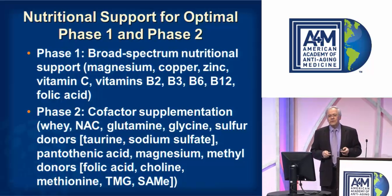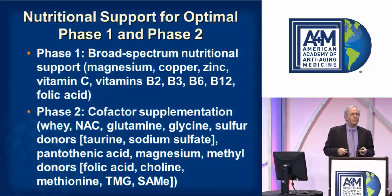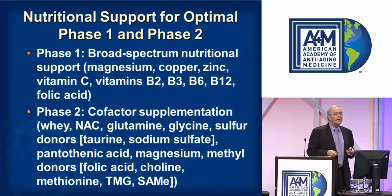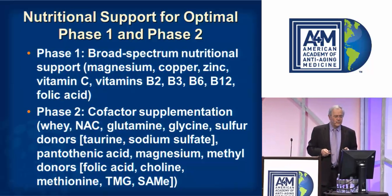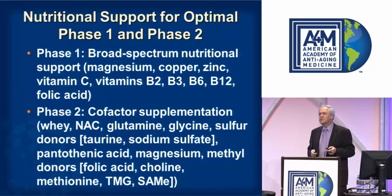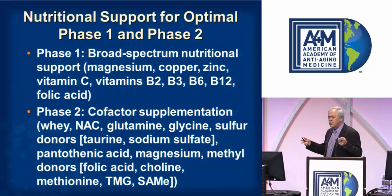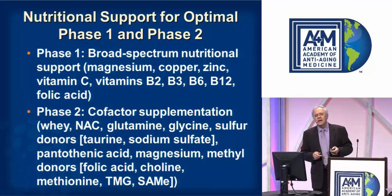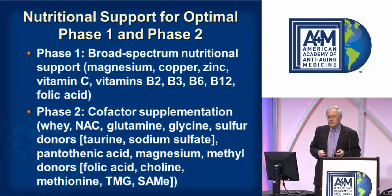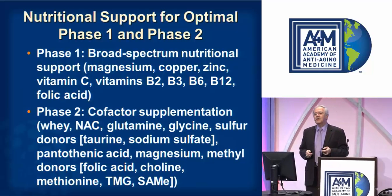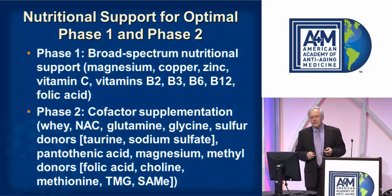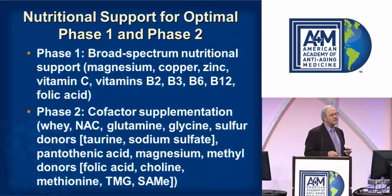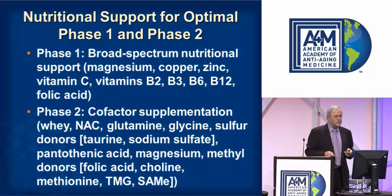For phase one, broad-spectrum nutritional support is important and we get this mostly from food. For phase two, we want to supply cofactors such as whey powder, N-acetylcysteine, glutamine, glycine, sulfur, and so on.